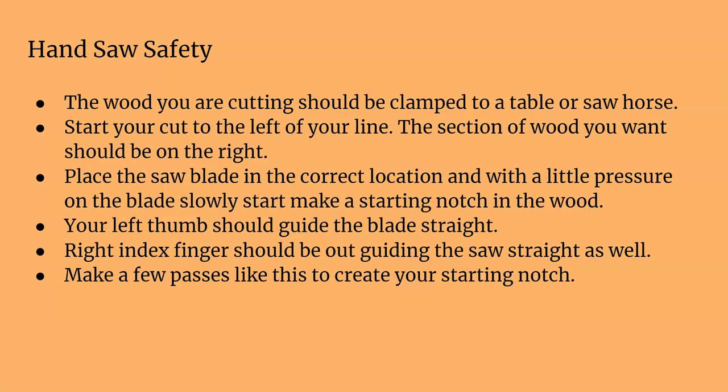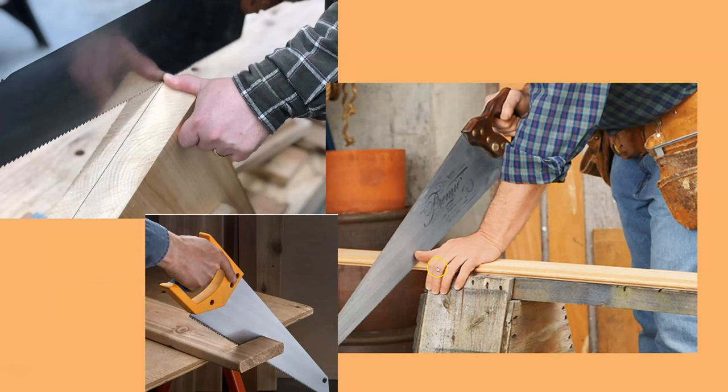Start your cut to the left of your line so you don't make the piece too short from the kerf. Place the saw blade in the correct location and with a little pressure slowly start making a starting notch in the wood. Your left thumb should guide the saw straight, and your right index finger should be pointing forward, telling the saw where to go. Make a few passes like that — you can see the thumb guiding it and the finger pointing exactly where you're going.